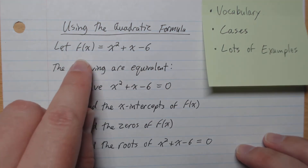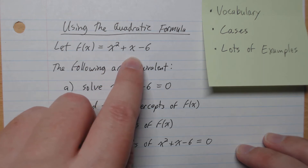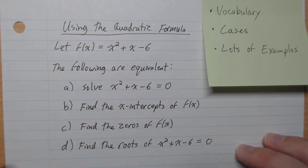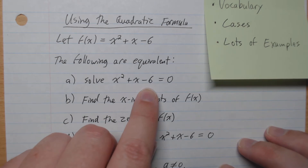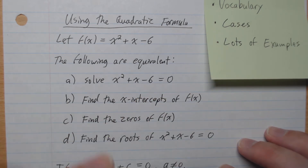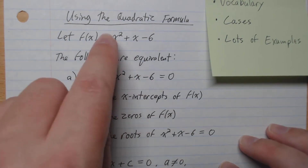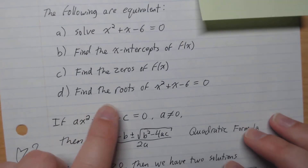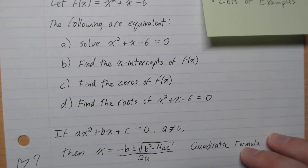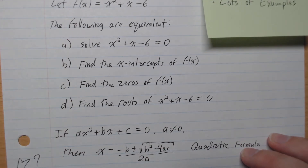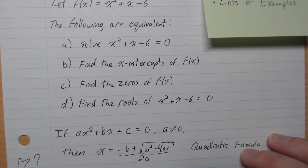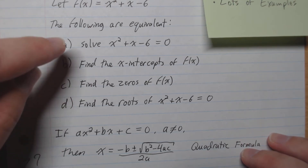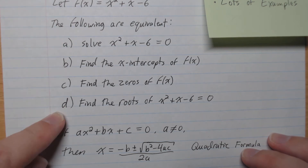Let's start with this. We've got a function f of x equal x squared plus x minus 6 — a quadratic function. The following are all equivalent: solve x squared plus x minus 6 equals 0 (what x values give 0?), find the x-intercepts of f of x, find the zeros of f of x, or find the roots of this quadratic equals 0. All of these mean the same thing, and you'll run into all of them in your math journey.